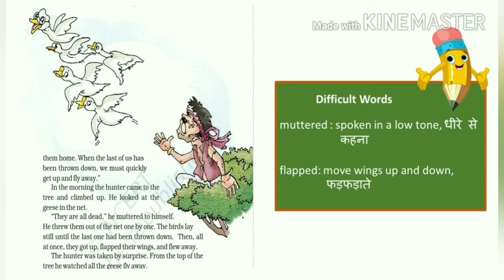The birds lay still until the last one had been thrown down — वो सारी birds जमीन पर लेटी रही, ऐसे नाटक करती रही जैसे कि वो मर गई हैं, जब तक कि hunter ने last bird को भी जमीन पर नहीं फेंक दिया. Then all at once they got up, flapped their wings and flew away — तो जैसे ही hunter ने last bird को नीचे फेंका, वो सारी birds एकदम से एक साथ उठीं, अपने wings को flap किया और आसमान में उड़ गईं. The hunter was taken by surprise — वो hunter इस चीज को देखकर shocked रह गया. From the top of the tree, he watched all the geese fly away — वो tree के ऊपर से देखता रहा, उन सारी geese को आसमान में उड़ते हुए.